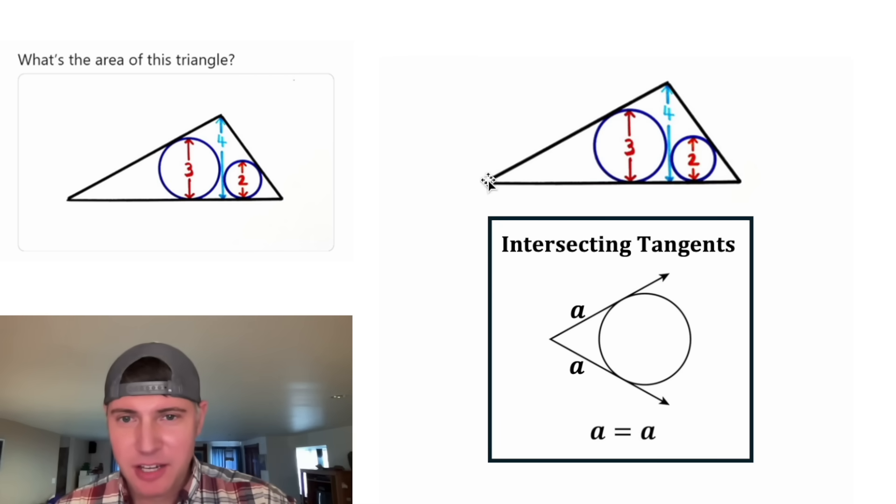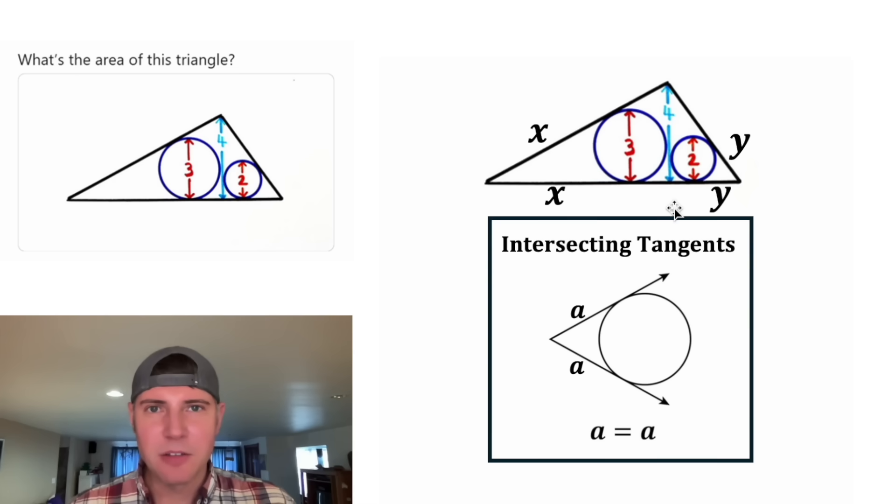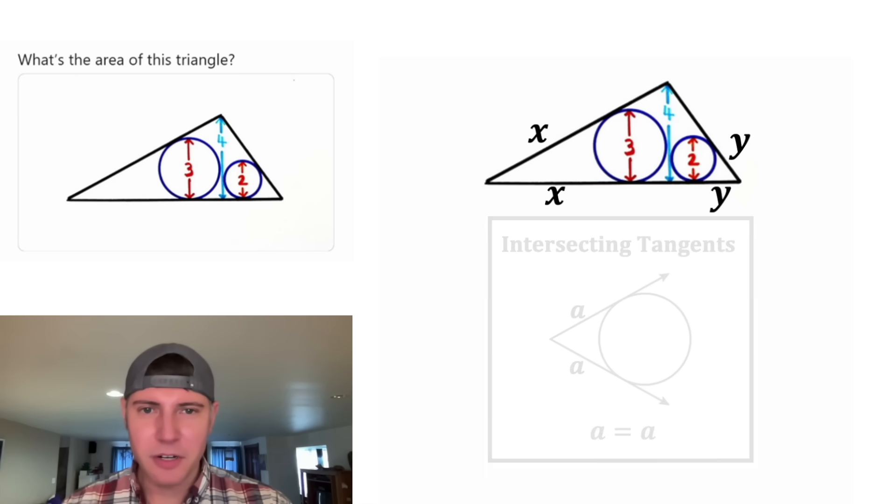So it's telling us that this tangent line is equal to this tangent line. Let's call them both X. And then this portion will equal this portion. Let's call them both Y. Does that make sense, Y? And I think we're done with the notes for now.